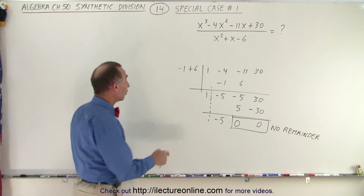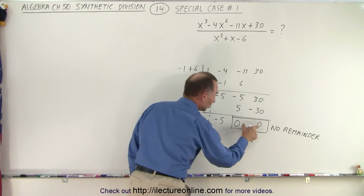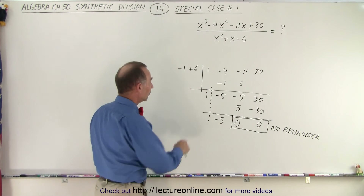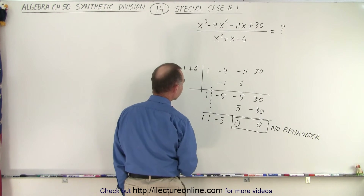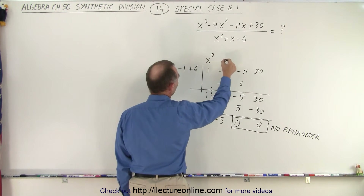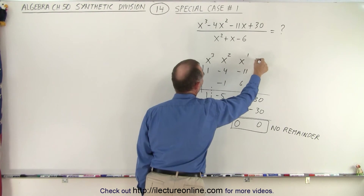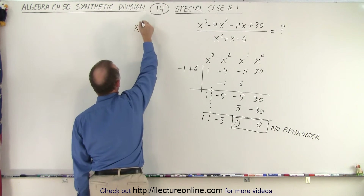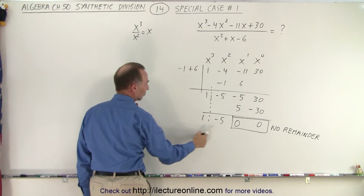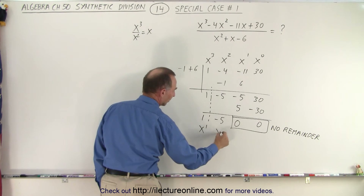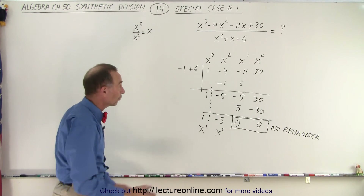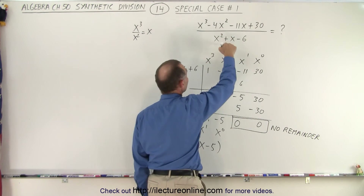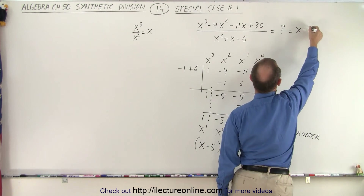Why do we need to worry about both of those? Because we had two numbers here, which means we look at the last two numbers here. They both need to be 0 in order to have 0 remainder. If we drop the first number down right here, we get a 1. Notice that this was x to the third, x squared, x to the first, and x to the 0. And over here, notice that in the denominator we have x squared. So x cubed divided by x squared is equal to x, which means our first number here is x to the first power, and this is x to the 0 power with no remainder.